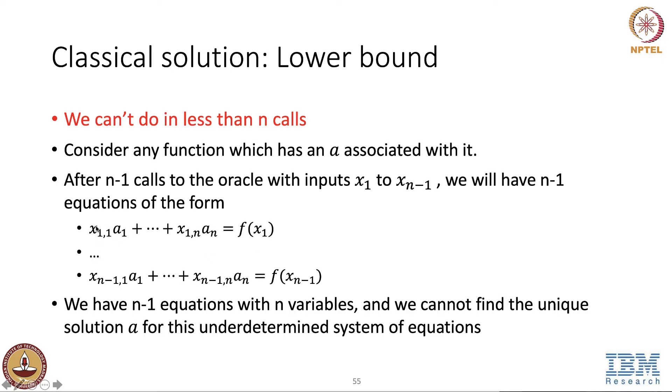So it's like we have this system of n minus 1 equations with n variables, a1 to an. And we know that this is an underdetermined system of equations, which means there are less equations than variables and we cannot find a unique solution a for this system of equations. So irrespective of what queries that we do to this classical oracle, we have to use n queries to this oracle to determine a. And as we saw in the previous slide, it's also an upper bound. So we know an algorithm that after n queries will give the output and here with the intuition that we provided, we also know that we need at least n queries.